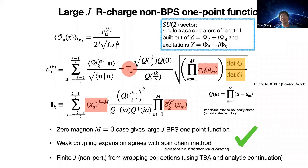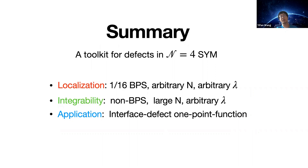Let me just summarize. As I promised, I presented to you a toolkit for studying defects in N=4 SYM. First of all, there's a localization method that allows extraction of general 1/16 BPS defect networks in N=4 SYM for arbitrary gauge group and arbitrary coupling. There's also a complementary method by a bootstrap approach to integrable boundary states that takes care of non-BPS correlation functions in the strict large N limit, but otherwise at arbitrary 't Hooft coupling. And I've illustrated the power of these methods in the context of a particular application to one-point functions in N=4 SYM in the presence of a half-BPS D5-brane interface.